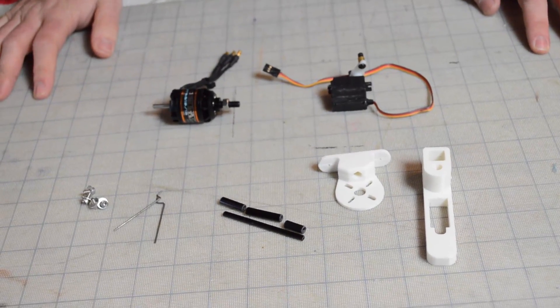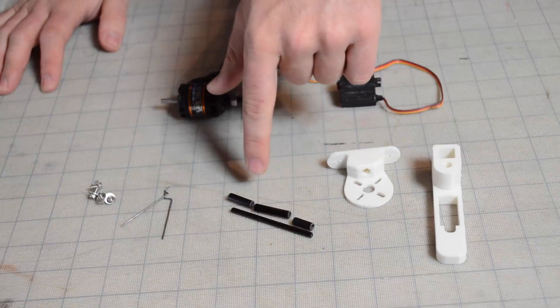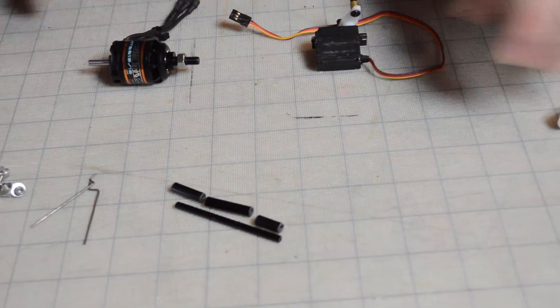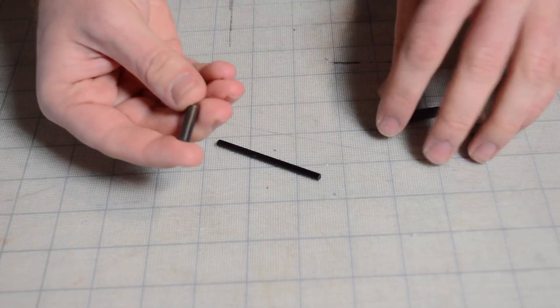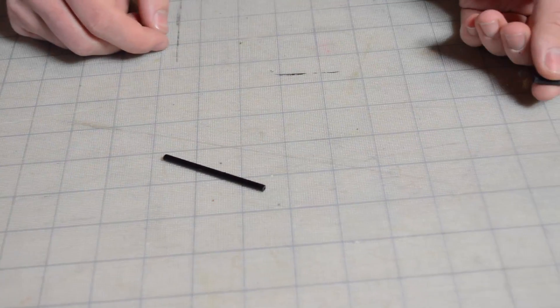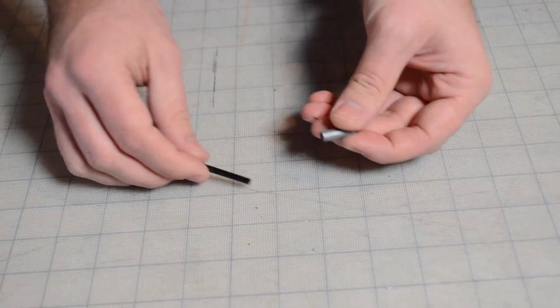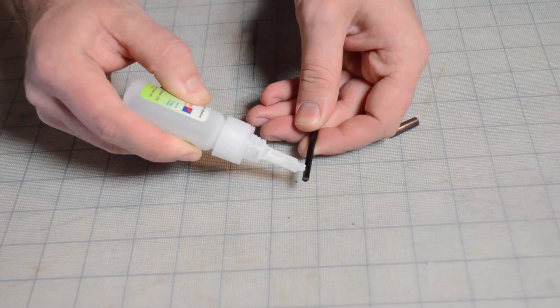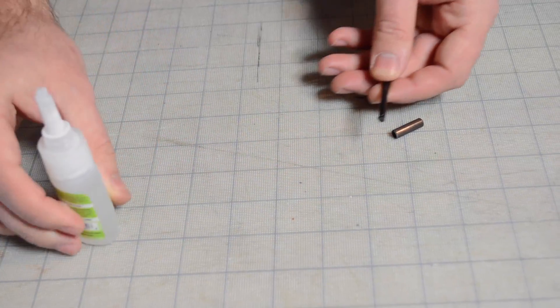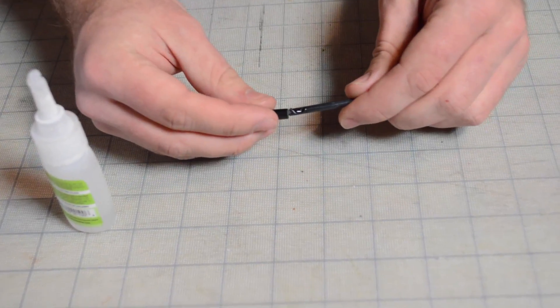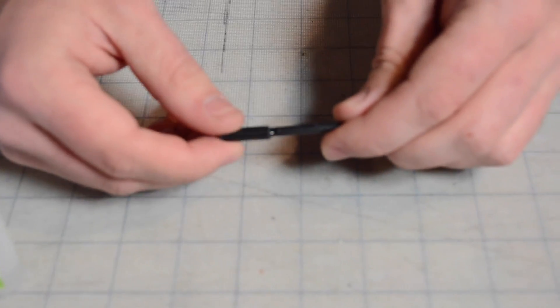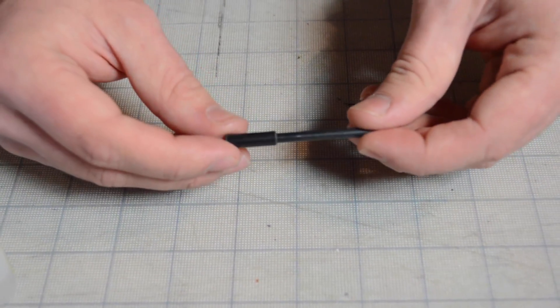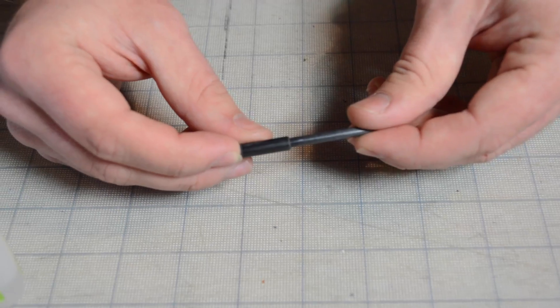So let's get started. The first step is to assemble this carbon section so that we can put it into the motor mount. So let's move everything else aside. You're going to take the three-quarters of an inch, that's the medium-sized one, and you're going to add a tiny bit of CA to the end. Just a little drop, like that, and then kind of swirl this around.